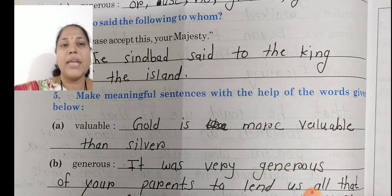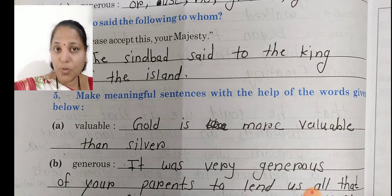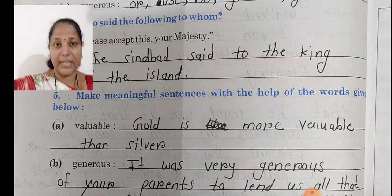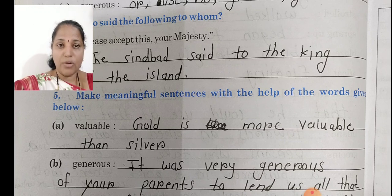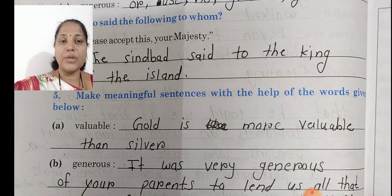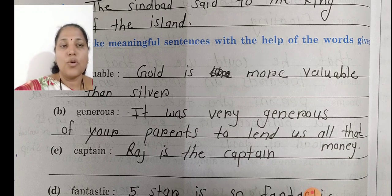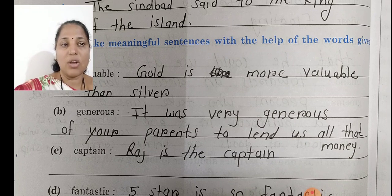Then after, make the meaningful sentence with the help of the word given below. Neeche diye gaye jo words hain, unse meaningful sentences banana hain. First is 'valuable': The gold is more valuable than silver. Gold jo hai silver ke comparison mein zyada valuable hota hai — us ki price jo hai comparing to silver is more. Then second word is 'generous': It was very generous of your parents to lend us all that money.